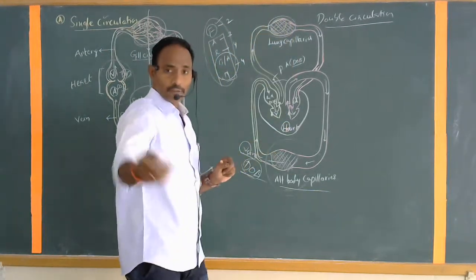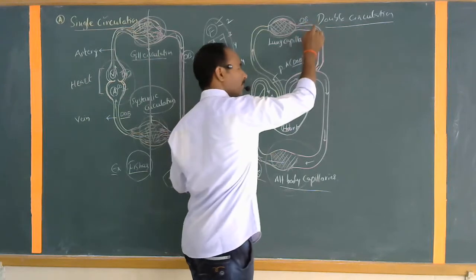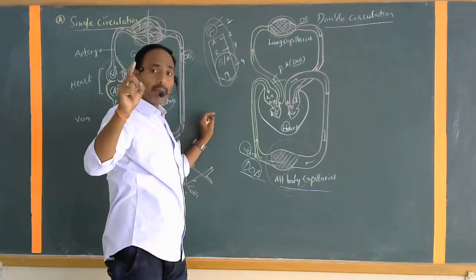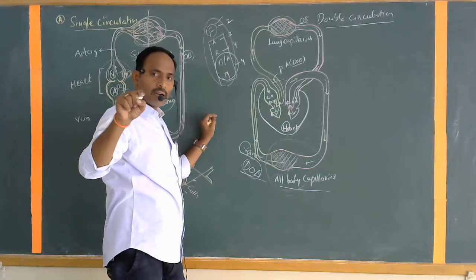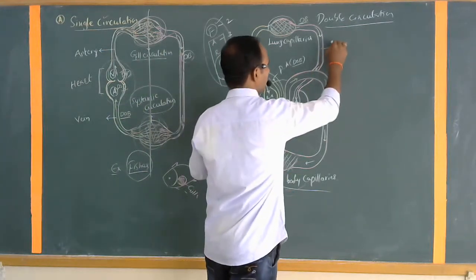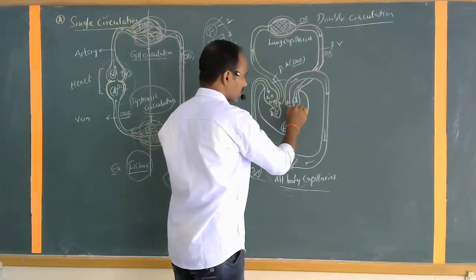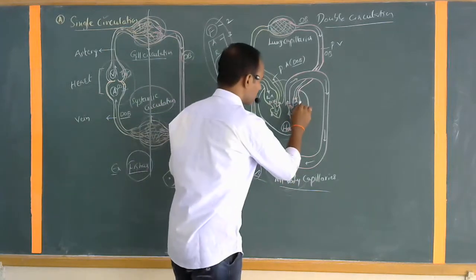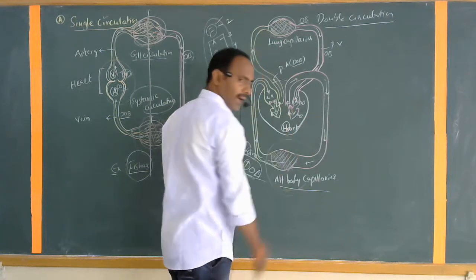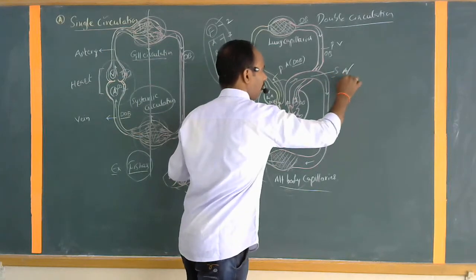The blood is purified by the process of diffusion. From this point onwards, the blood is called oxygenated blood. That oxygenated blood from the lungs is carried by the pulmonary veins — all veins normally contain deoxygenated blood, but the pulmonary vein contains oxygenated blood. This blood opens into the left auricle.